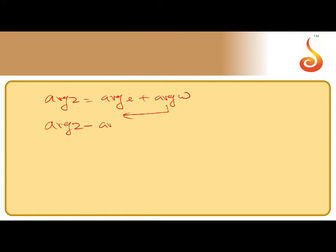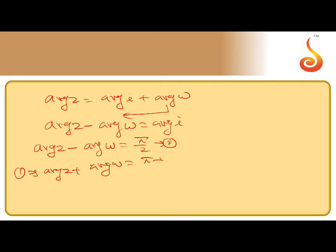Argument of z minus argument of w equals argument of i. Argument of i is π/2, second equation. What is the first equation? Argument of z plus argument of w is π.